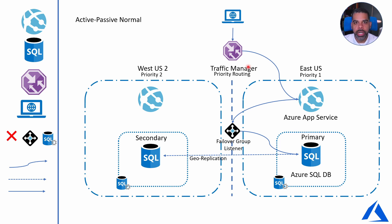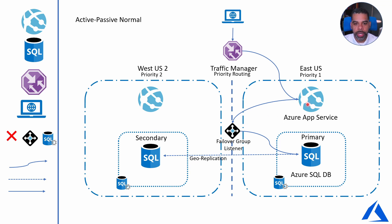If we had 10 regions in our architecture, it would just go down the list of priority and find the healthiest one and route the traffic there. In this case, East is priority one, so if we have a request coming in, Traffic Manager will route it to our web app sitting in East. Our web app is connected to the SQL database. What we've set up for our SQL environment is known as a failover group listener, and that failover group listener takes the communication from the application and routes it to the database set up as primary.